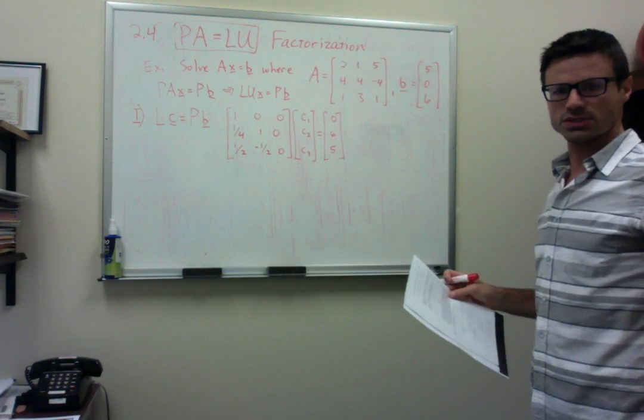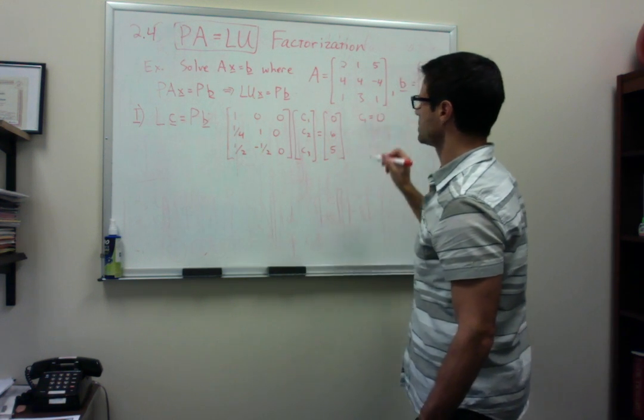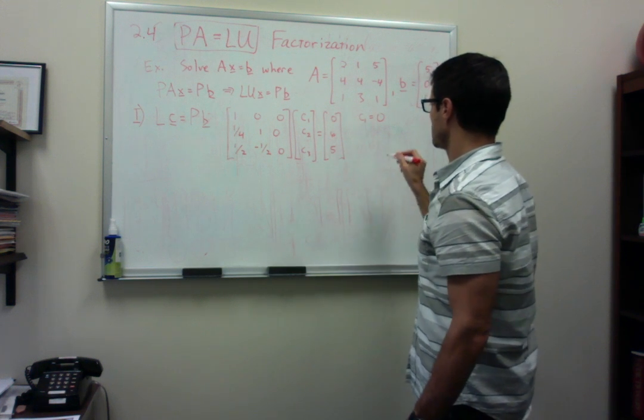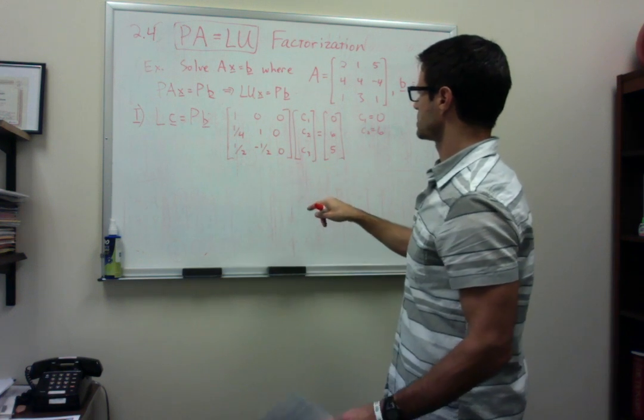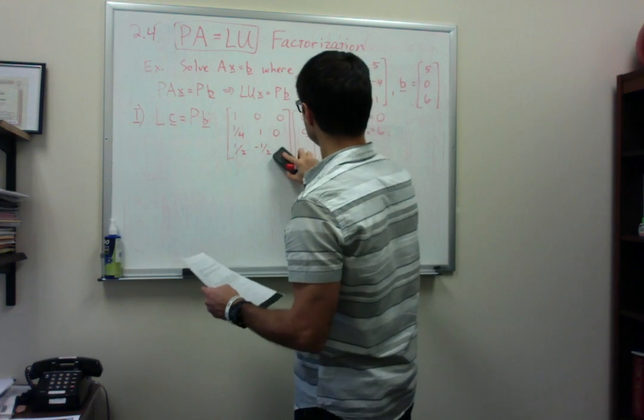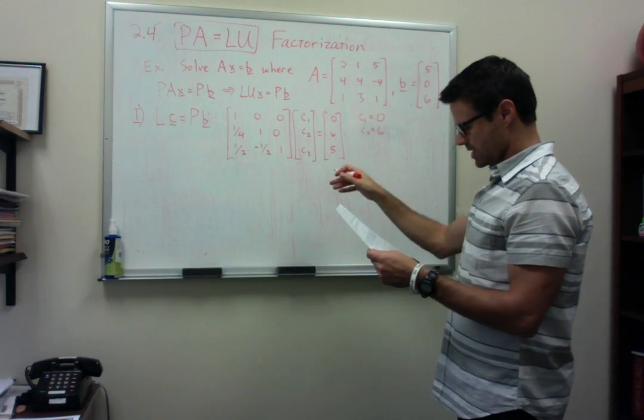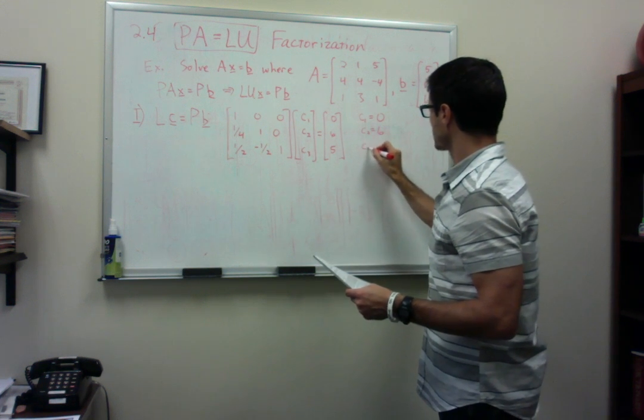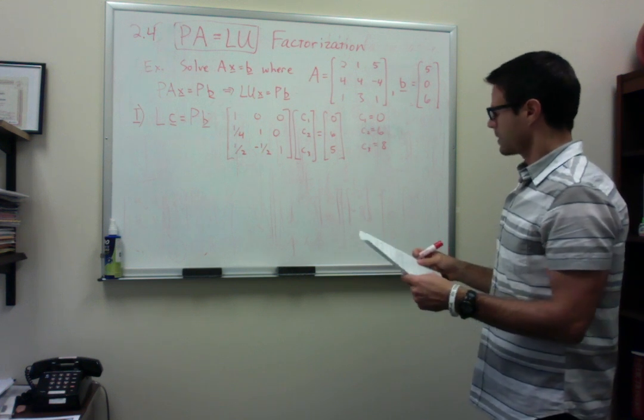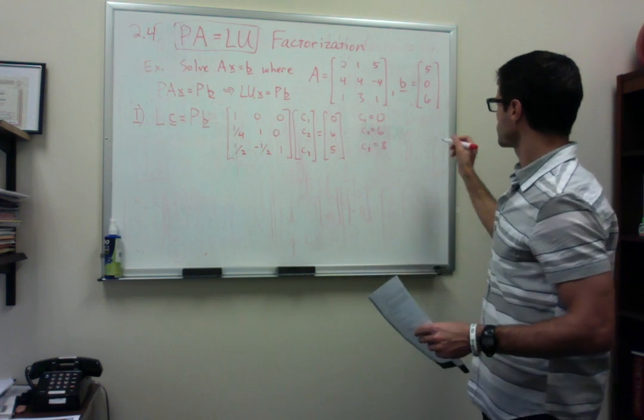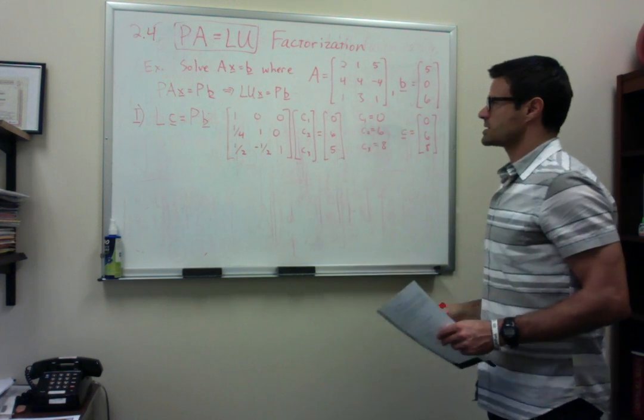And now we use that forward substitution process. So the forward substitution gives us C1 equals zero. And then C2 is going to end up equaling six. And if I substitute C1 and C2 into this last equation, it turns out C3 equals eight. I'll give you a moment to make sure that you agree with this. So our C vector is the vector zero, six, eight. And then we go on to step two.